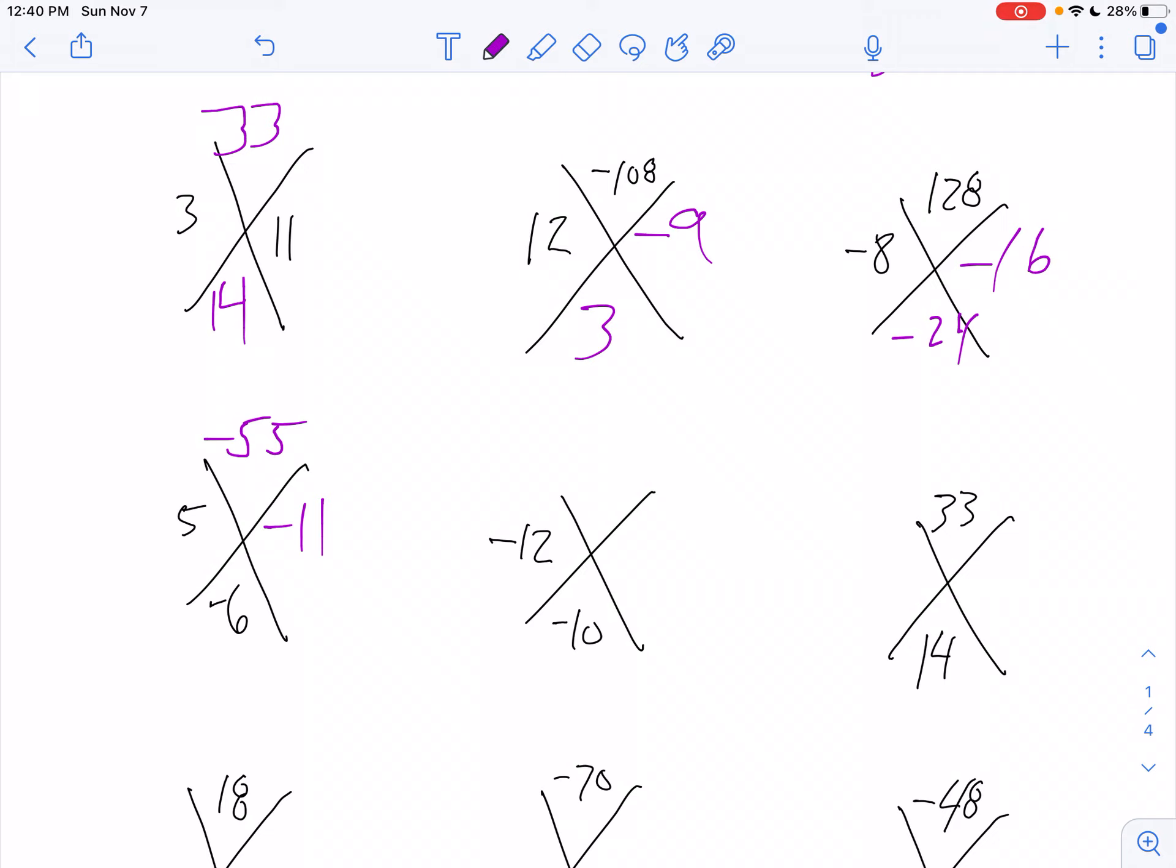We go to the next one. Negative 12 plus what gives us negative 10? Well, that would be a positive 2 because negative 12 plus 2 is negative 10. And then negative 12 times 2 is negative 24.